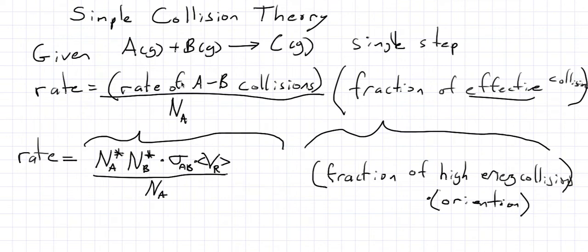The rate of AB collisions is going to be the number density of A times the number density of B, times the collision cross section for A and B, and the relative velocity for A versus B. Of course we divide that by Avogadro's number. The fraction of effective collisions can be a function of two things: the fraction of collisions that have a high enough energy to actually react, but also orientation matters too. If the two reactive parts of the molecule aren't pointing at each other, it doesn't really matter how high the energy is. So we have to multiply both of these.